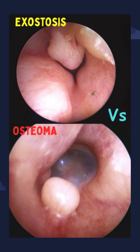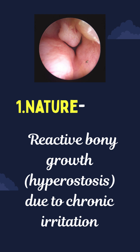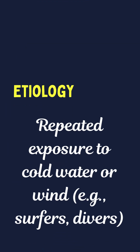One of the differential diagnoses of exostosis of the ear canal is osteoma. The symptomatology and management pattern of both are almost the same, but you must know the differences between them. Exostosis is a reactive bony growth due to chronic irritation caused by repeated exposure to cold water or cold air.